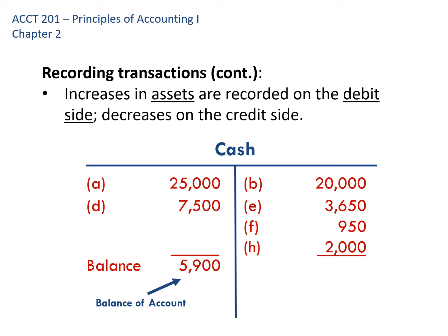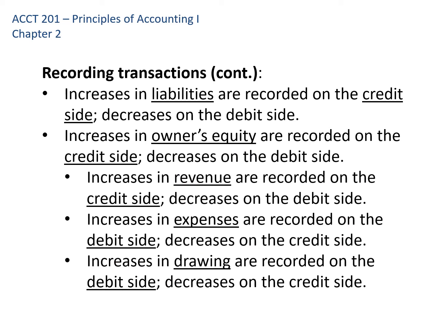The rules for liabilities are the opposite: increases are recorded on the credit side and decreases on the debit side. For owner's equity in general, increases are on the credit side and decreases on the debit side. Revenue, which increases owner's equity, also increases on the credit side. Increases in expenses — which pull down owner's equity — are recorded on the debit side. Increases in the drawing account — money the owners take out of the business — are also recorded on the debit side because they pull down owner's equity.